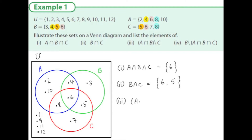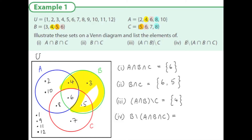Third question: A intersection B, not C. The intersection of A and B, not including the part in circle C, is just the element four. Last question: B, not (A intersection B intersection C). These are the things in B except for those in the very intersection of all three in the middle, so that leaves us with elements three, four, and five in any order.